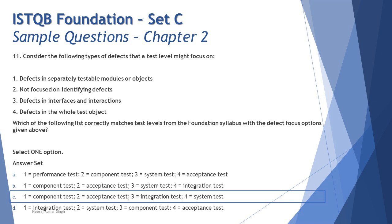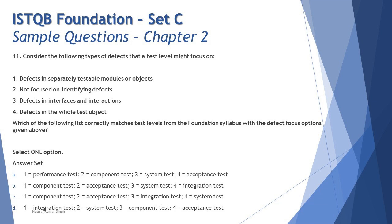Defect type 3 — 'defects in interfaces and interactions' — maps to integration testing, since interfaces and interactions are the core focus there. Defect type 4 — 'defects in the whole test object' — maps to system testing, which validates the entire system as a standalone entity. Putting it all together, the correct answer is C: 1 = component test, 2 = acceptance test, 3 = integration test, 4 = system test.